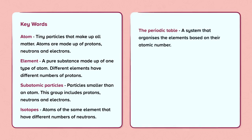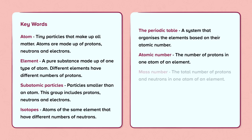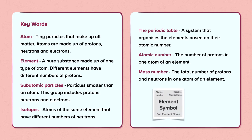The periodic table: a system that organises the elements based on their atomic number. Atomic number: the number of protons in one atom of an element. Mass number: the total number of protons and neutrons in one atom of an element.